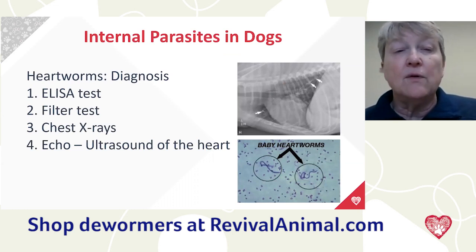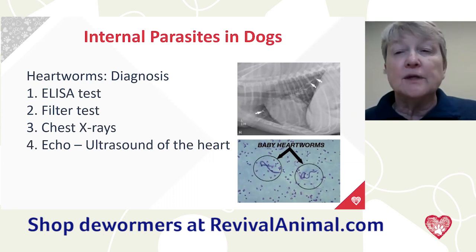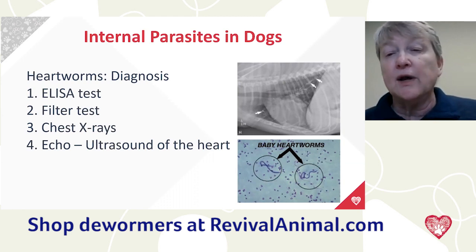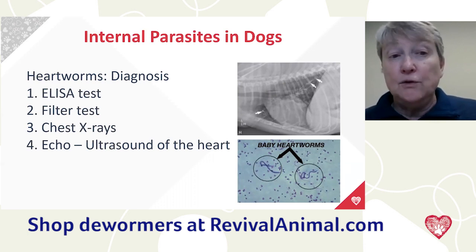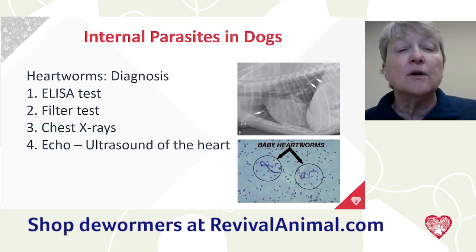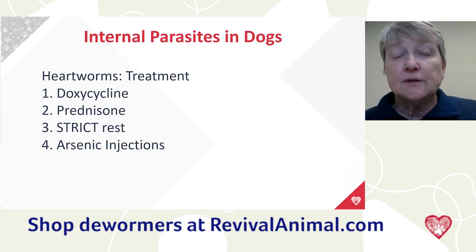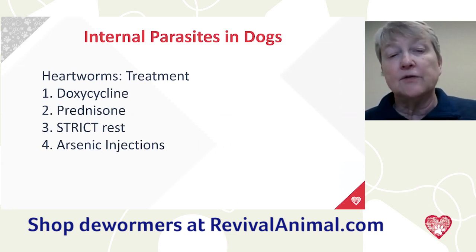Diagnosis is primarily done with an ELISA test — frequently the SNAP 4Dx test, which also checks for Lyme disease, anaplasmosis, and ehrlichia. X-ray changes can be characteristic of heartworm disease. You can also see heartworms on ultrasound — I once had a dog come in with a murmur and coughing, we scheduled an echocardiogram, and the cardiologist could see the worms in the ultrasound. Treatment consists of doxycycline and prednisone prior to arsenic injections, with absolutely strict rest for months, then a series of arsenic injections. It's expensive and a big deal — so please prevent it.